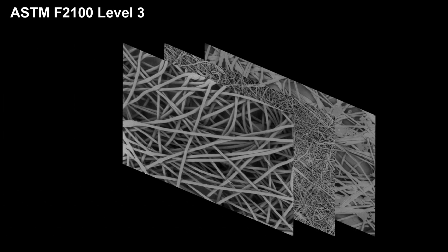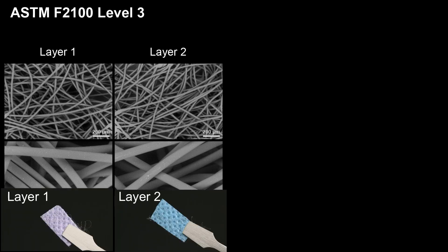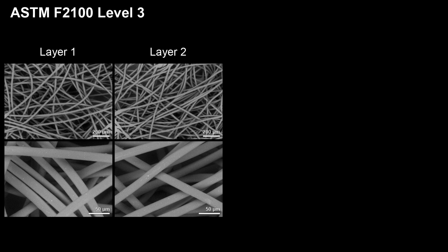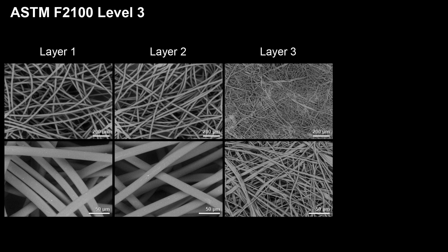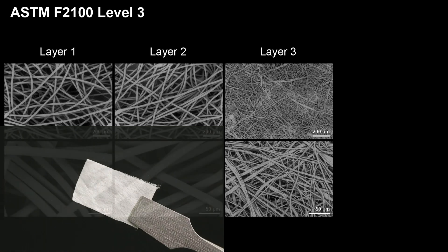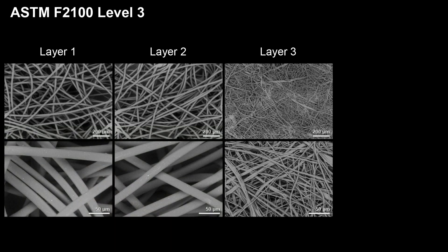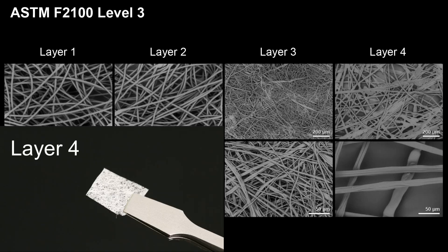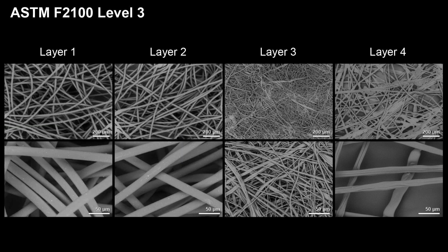Now let's look at the level 3 mask. It is made of four layers. The two layers on the top are basically the same with no noticeable structural differences. The additional top layer is likely a contributing factor in improving the fluid resistance compared to the level 1 mask. The fiber diameter of these two layers is about 19 microns. Looking at layer 3, which is the main filtration layer, the fiber density appears to be much higher than the middle layer of level 1, with an average fiber diameter of about 2.2 microns — slightly thicker than level 1. Finally, the fibers on layer 4 are rather sparsely spaced and the layer is quite thin, clearly not functioning as a filtration layer.